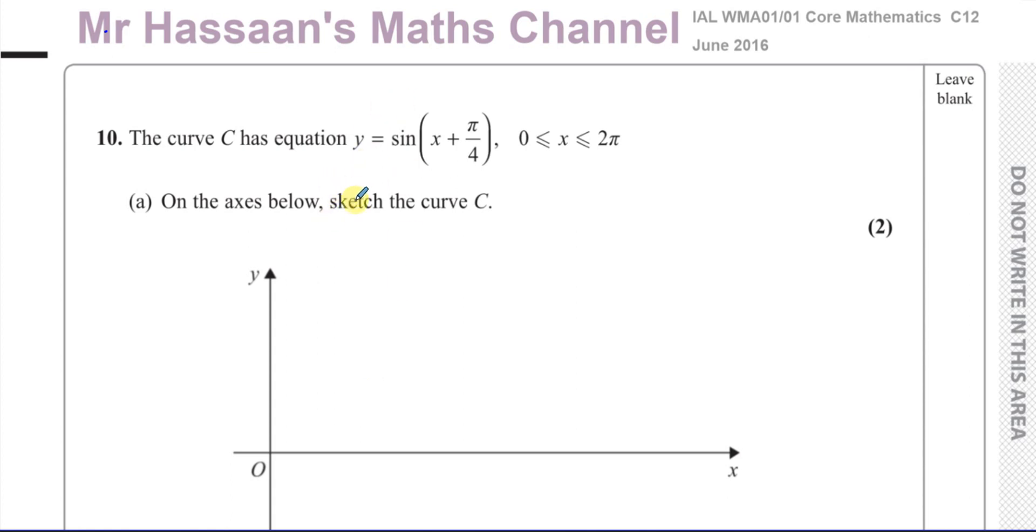Part A is related to sketching curves. It says the curve C has equation Y equals sine of the angle X plus pi over 4, and the graph that we have to draw is restricted between 0 and 2 pi. This domain is between 0 and 2 pi. So on the axis below we need to sketch this curve C between 0 and 2 pi.